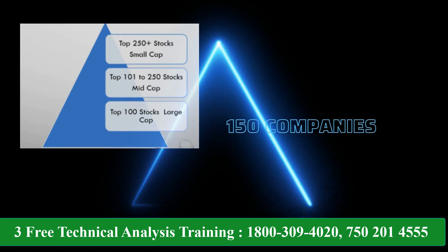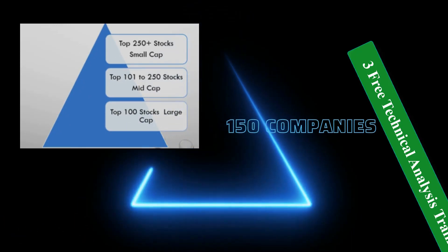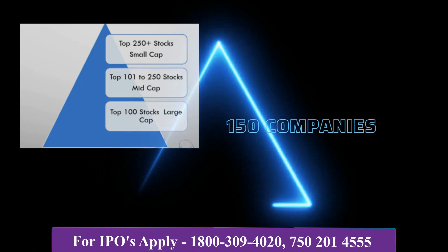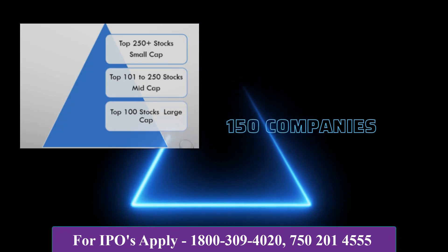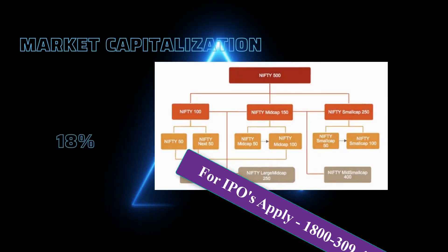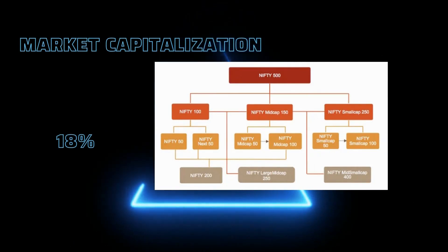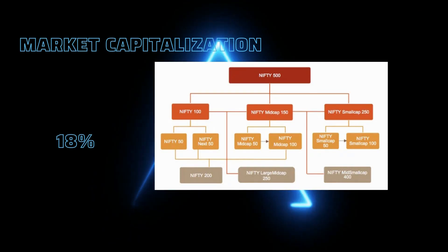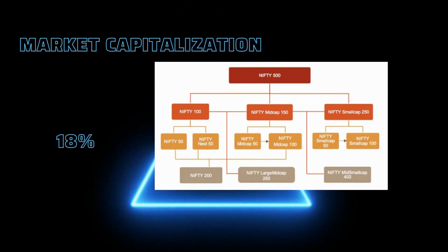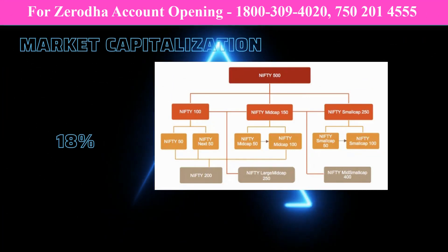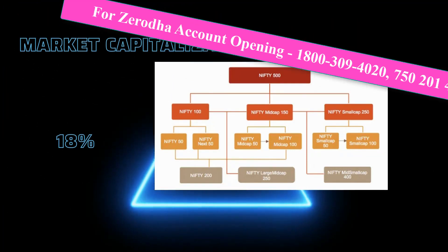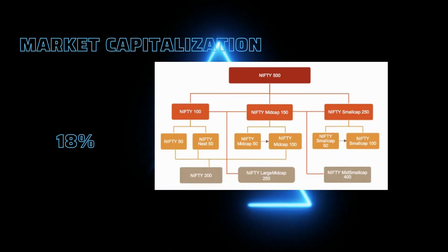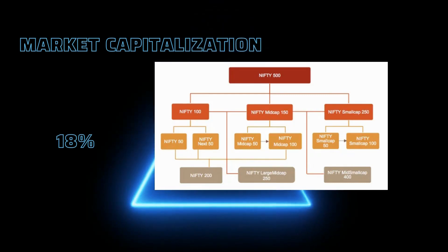The Nifty 150 Mid Cap index, as the name suggests, consists of 150 companies. These companies are ranked between 101 to 250 in the Nifty 500 list and is based on their full market capitalization. In the stacking order, the Nifty 50 companies are generally established industry leaders and represent 56% of the Nifty 500 total market capitalization. Then comes the Nifty Next 50, which are tomorrow's superstars. After this come the Nifty 150 Mid Cap companies, which comprise over 18% of the Nifty 500 market capitalization.